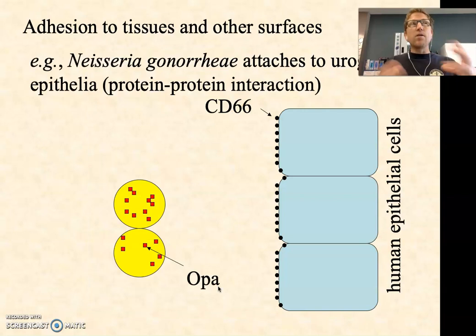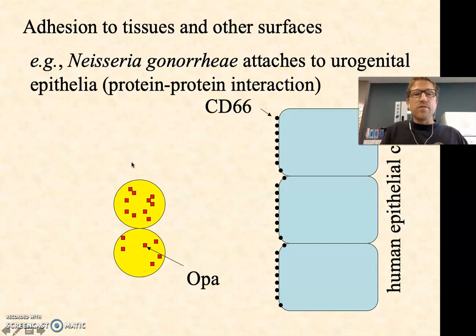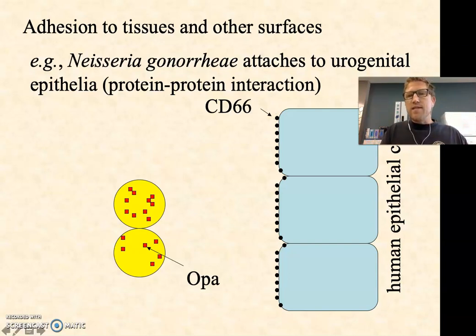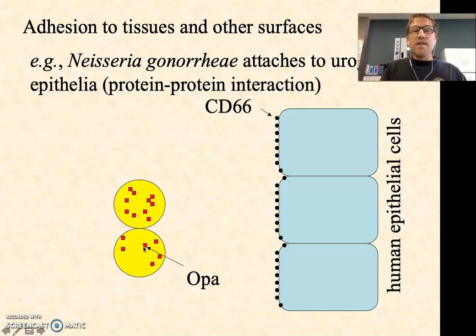Another important category is specific adhesion proteins on the surface of the pathogen. An example is Neisseria gonorrhea, one of the very few cocci that are gram-negative — a gram-negative diplococcus. It has on its surface a protein called OPA, which has a very high affinity for a molecule called CD66. CD66 is a protein found in high abundance on the surface of human epithelial cells, so these Neisseria gonorrhea diplococci have a very easy time attaching specifically to human epithelial cells.